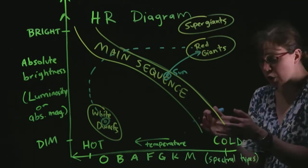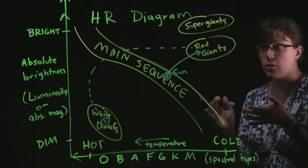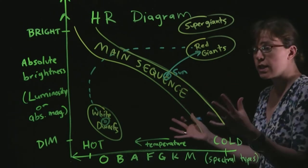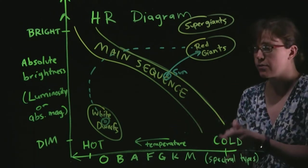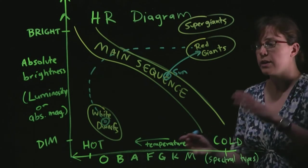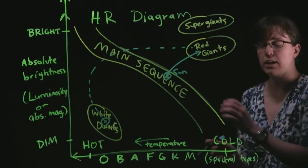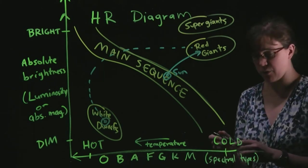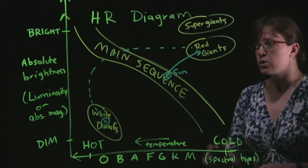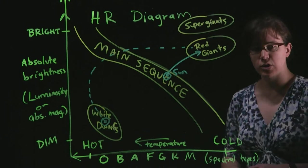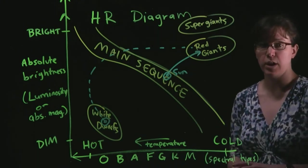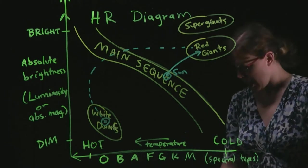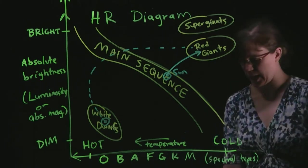Then the Sun will lose all of its outer layers, and what we'll end up with is the exposed core of the Sun as a white dwarf. The core of the Sun is already very hot, and when those outer layers are lost, we'll see that extremely hot, very dense core crunched down to become a very small white dwarf about the size of the Earth. This process of stars moving around on the HR diagram is something we'll see in future slides — this is a foreshadowing of that.